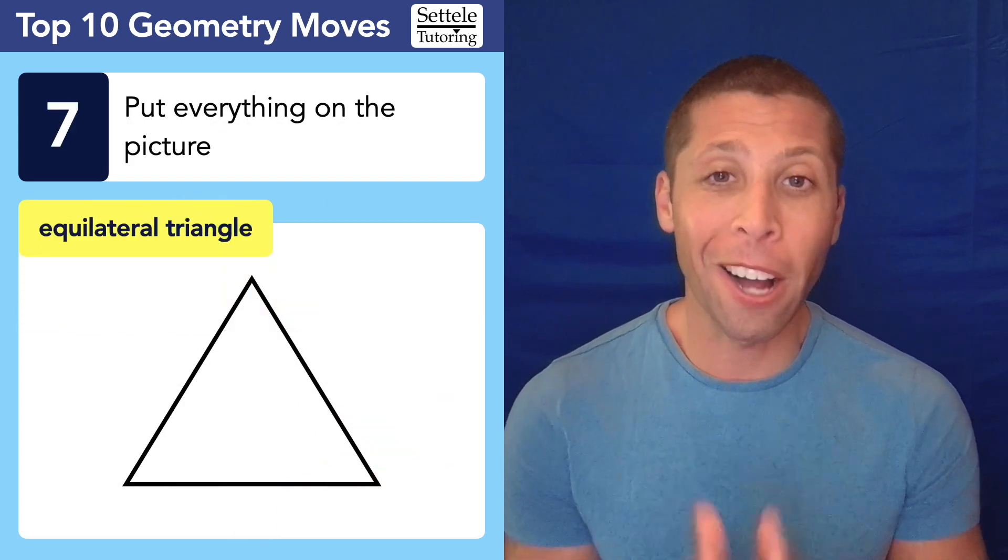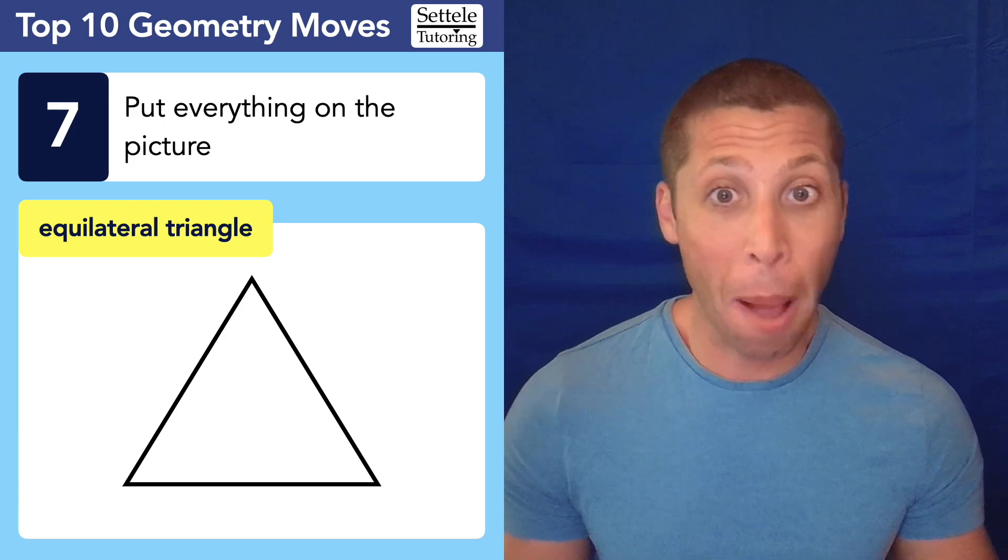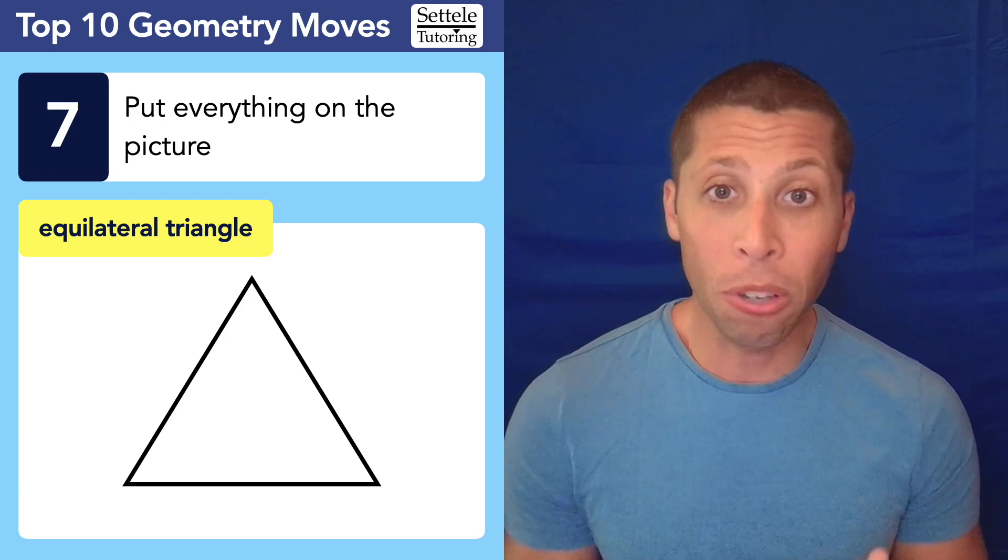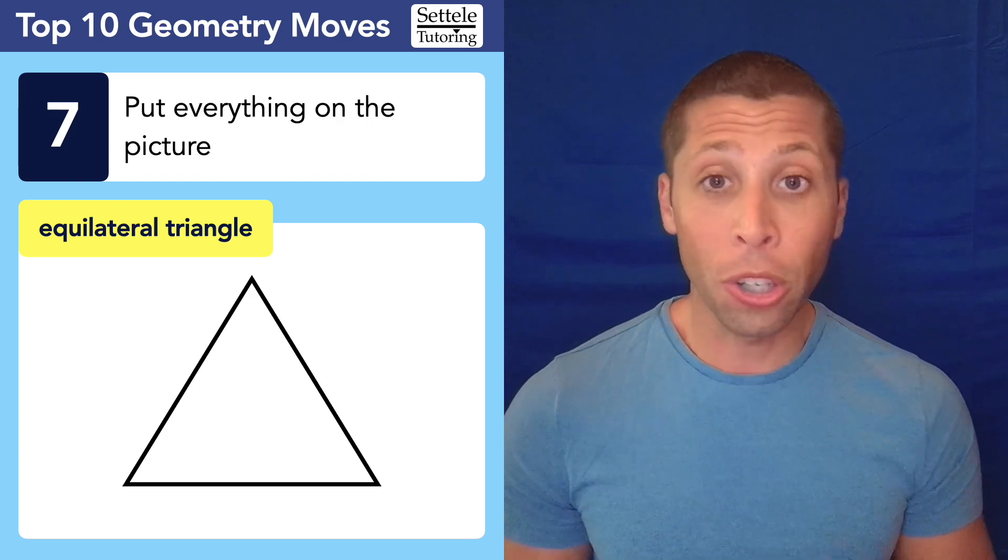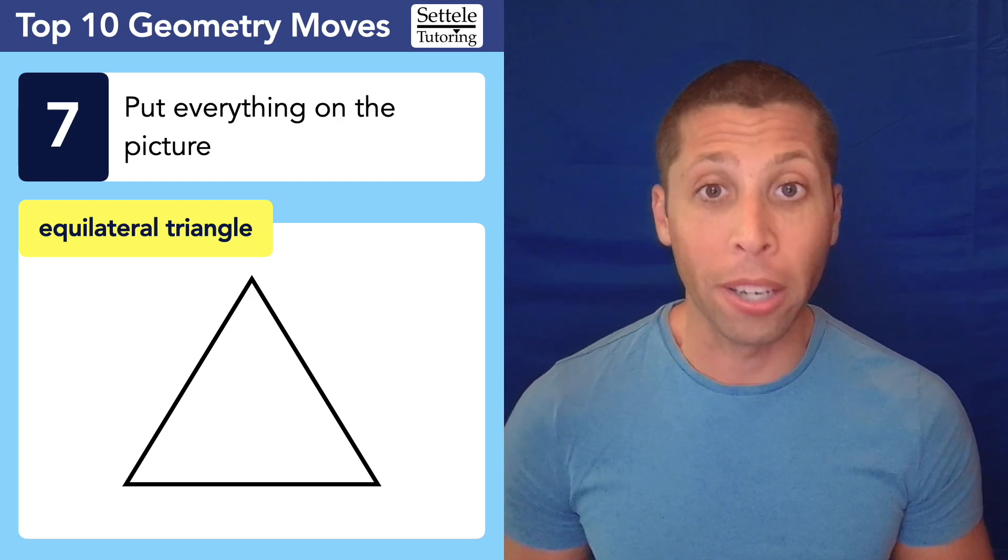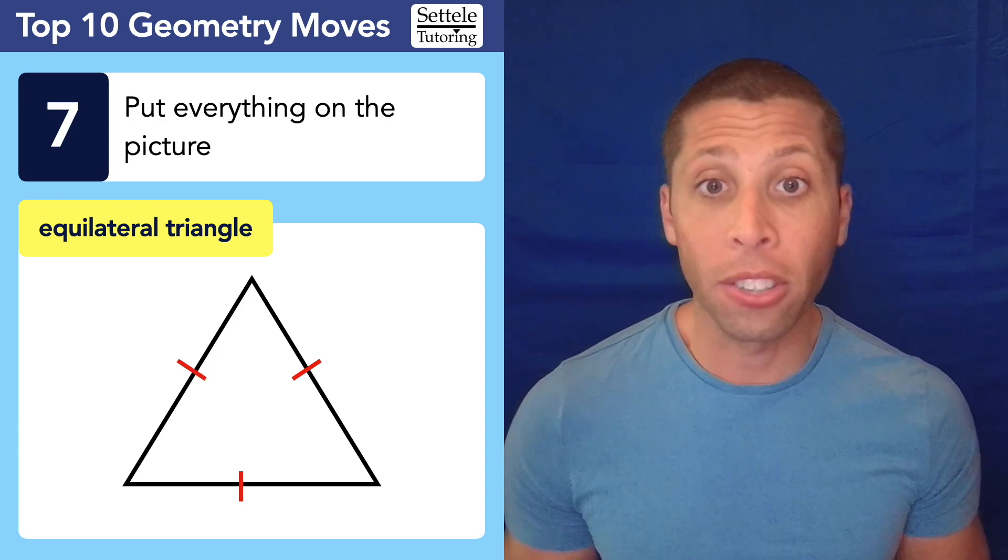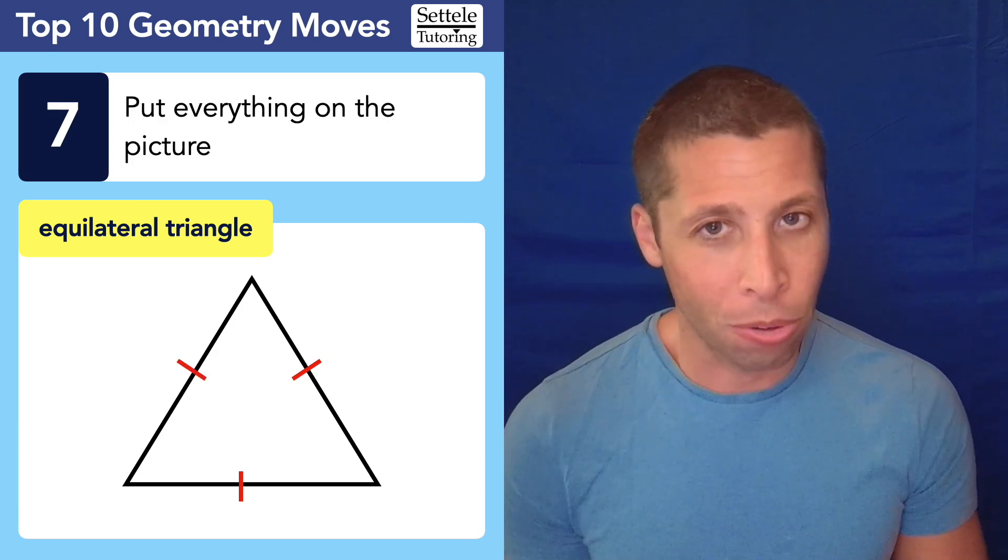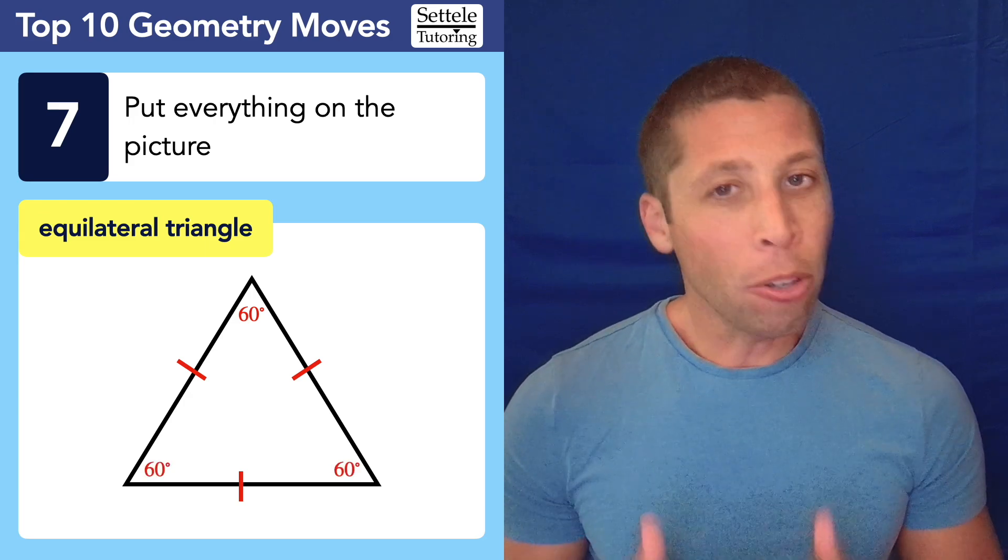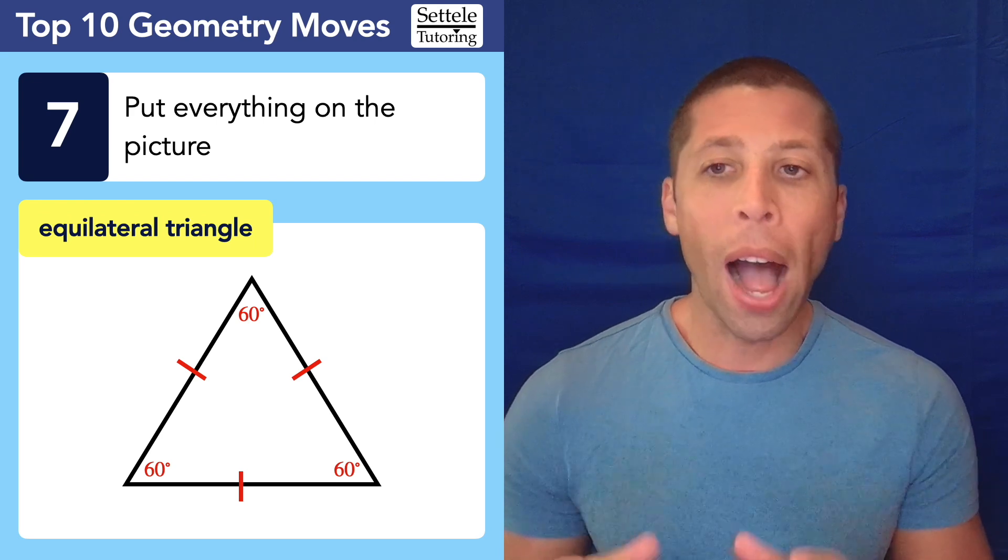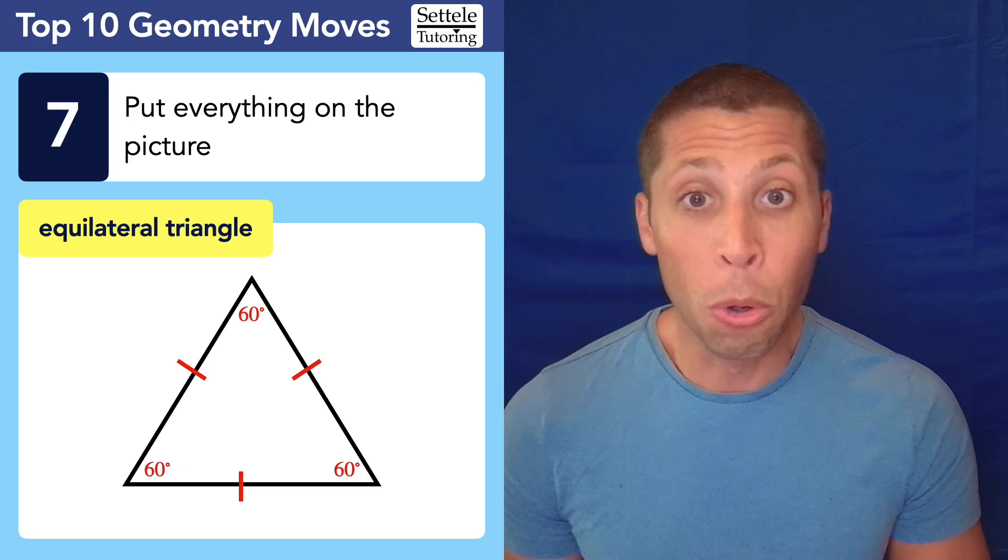Number seven on our list here, put everything on the picture. I cannot stress how important this is. You have scratch paper for the SAT. Geometry is an excellent place to be using it. And anytime they tell you some piece of information, put it on the picture, no matter how unimportant it seems. So if they told us in a question that we have an equilateral triangle, I'd obviously draw one on my scratch paper. I know that an equilateral triangle has all equal sides, so I would put little marks to indicate those sides are congruent. But I also know that an equilateral triangle has equal angles, and I know the measure of those angles is 60 degrees. I would put it on the picture so that you can see with your eyes that it's 60 degrees.